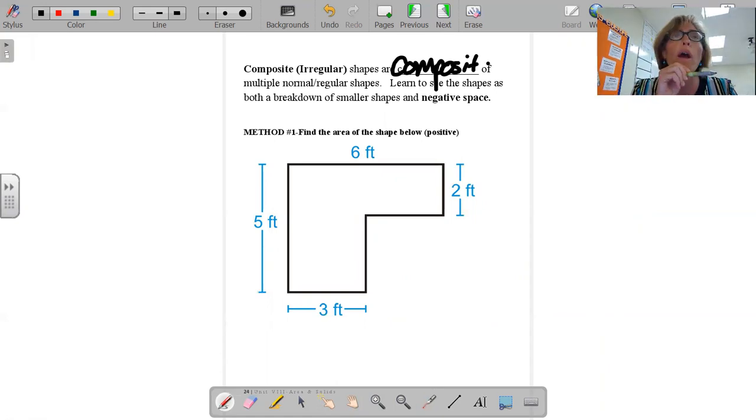And there's two ways that you need to look at composite shapes. It's called positive, where you add stuff, and negative, where you subtract stuff. Positive and negative space. We're going to do the same problem using both methods. Find the area of the shape below using what's called positive. Positive means we're adding stuff together.